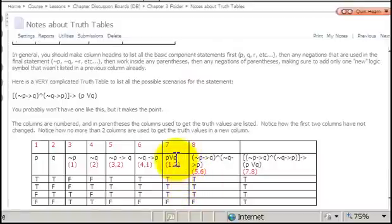Next, we wanted to look at p or q in the seventh column. Now, the rule for an OR statement is that an OR statement is only false if both components are false. And looking at p or q means we're going to refer back to the first two columns. And where are they both false? Only in the last row. So the statement p or q is only going to be false in the last row: true, true, true, false.